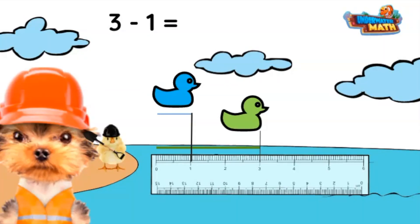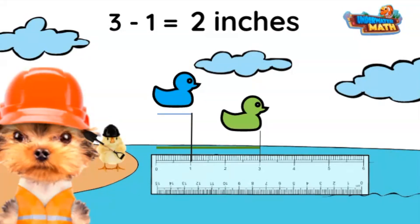The green duck glided two more inches than the blue duck. Another way you can find the difference is to count how many inches are between where the blue duck landed and where the green duck landed. There are one, two inches in between.